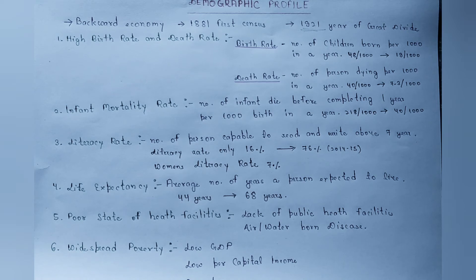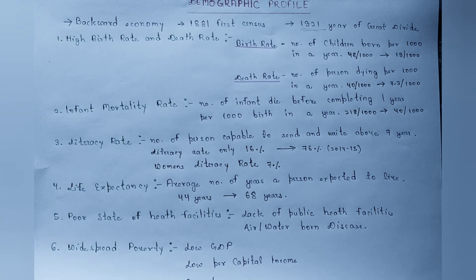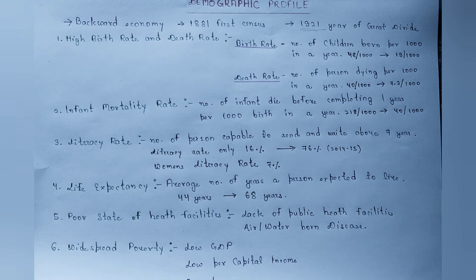जो third feature है वो है literacy rate। किसी भी person को literate तभी कहते हैं जब वो 7 साल से ज़्यादा की age का हो और वो आसानी से कोई भी language को पढ़ या लिख सके। उस वक्त जब हमारा देश आज़ाद हो रहा था, उस वक्त हमारा literacy rate about 16% था और अभी हमारा literacy rate 76% है। उस वक्त women's literacy rate सिर्फ 7% था।